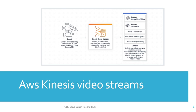Amazon Kinesis Video Streams makes it easy to securely stream videos from connected devices to AWS for analytics, machine learning, and other processing. As you can see in this diagram, the input comes from camera devices, which securely stream video to AWS using the Kinesis Video Streams SDK. Kinesis Video Streams ingests, durably stores, encrypts, and indexes video streams for real time and batch analytics. Then real time and batch-driven machine learning applications, video processing, and playback services use the Kinesis Video Stream APIs to access and retrieve indexed video data.